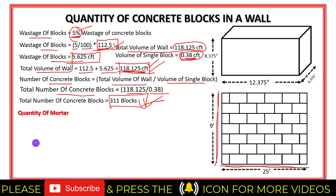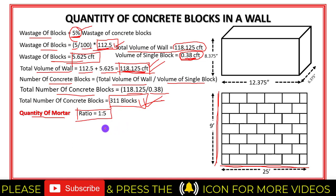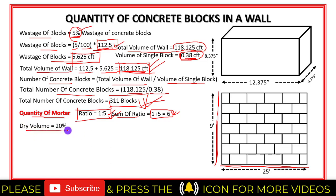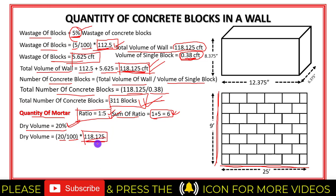Next is the quantity of mortar. Mortar is made by mixing cement and sand, and the ratio I am taking is 1:5, which is the most preferable one. The sum of the ratio is 1 + 5 = 6. In block masonry we normally take 20% of dry volume. So the dry volume equals 20/100 × 118.125 = 23.625 cubic feet. Note that this percentage of dry volume is different in brick masonry.